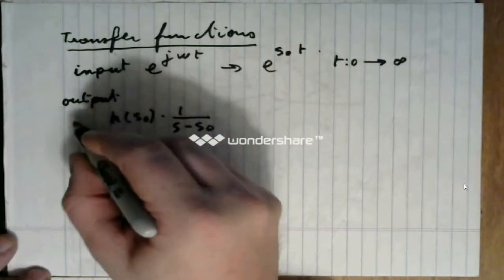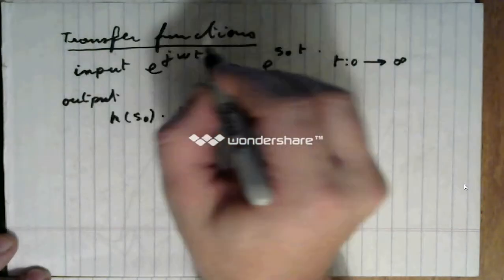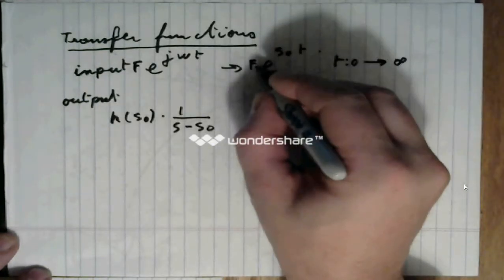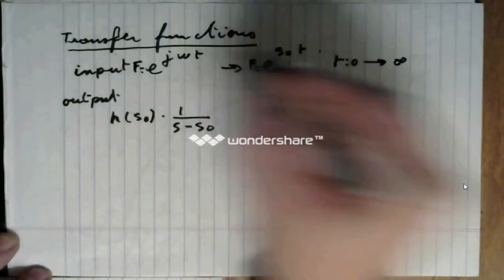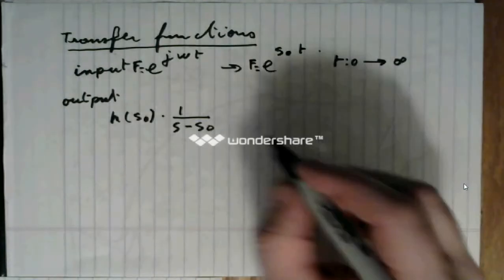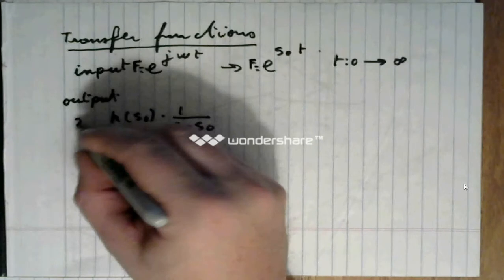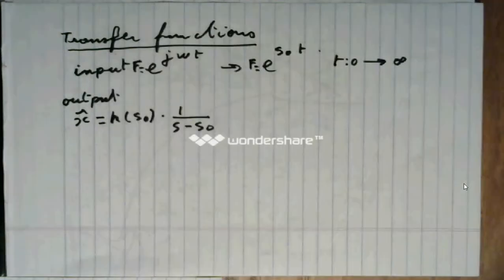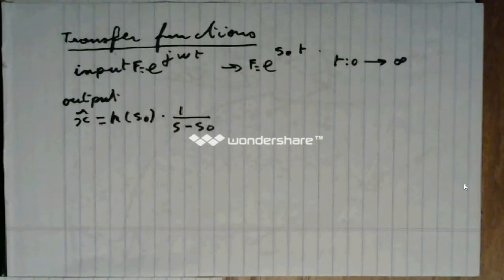So if this is f, which we replace by that f, a complex input, then x hat, the response to the system, will be this.